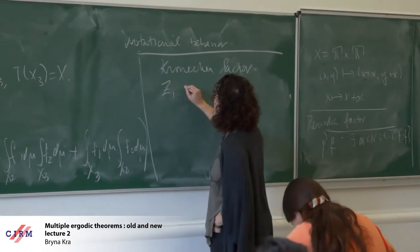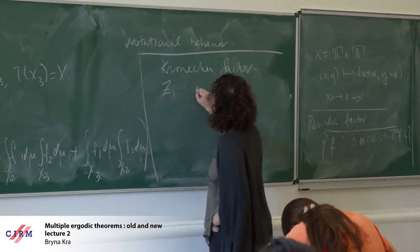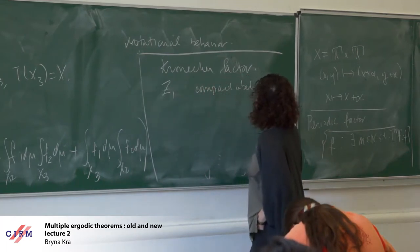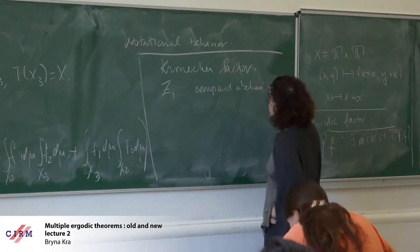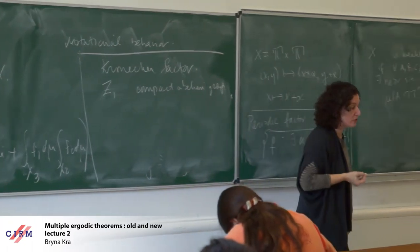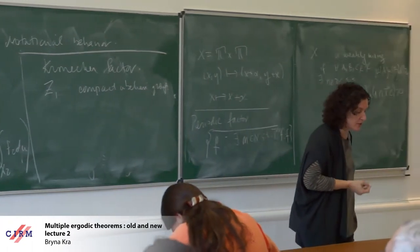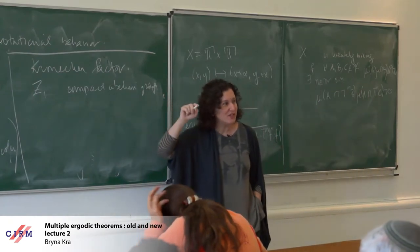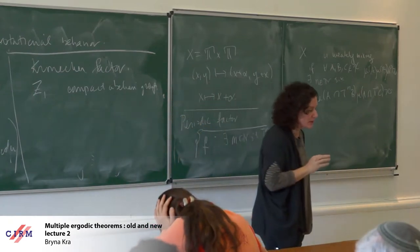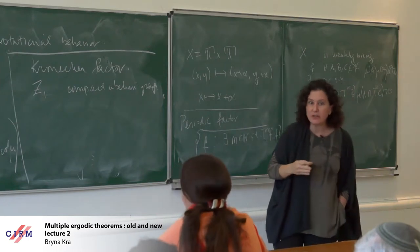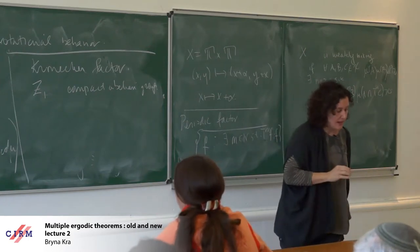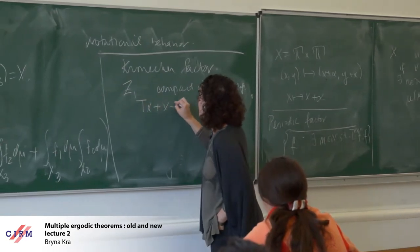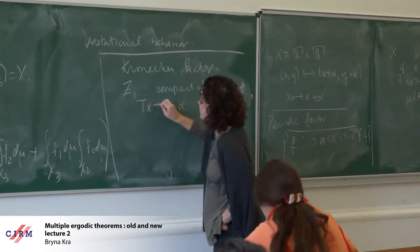The Kronecker factor is the sub-sigma algebra spanned by the eigenfunctions. But this will not really help us in doing these computations. What will help us is the fact that it has a very particular geometric and group structure, and that's the content of the Halmos–von Neumann theorem. This factor Z1 is a compact abelian group, and on the compact abelian group my transformation looks like a rotation.